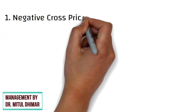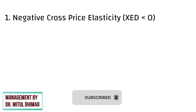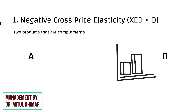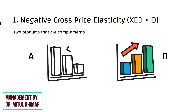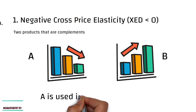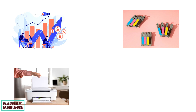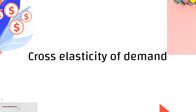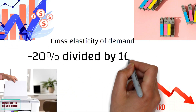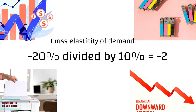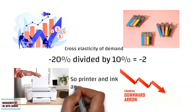Negative cross price elasticity is where the complementary cross elasticity of demand is less than zero. A negative cross elasticity denotes two products that are complements. If products A and B are complements, an increase in the price of B leads to a decrease in the quantity demanded for A, as A is used in conjunction with B. For example, in response to a 10% increase in the price of printer's ink, the demand for printers decreases by 20%. So the cross elasticity of demand would be minus 20% divided by 10%, which equals minus 2 — meaning an increase in the price of ink decreases the demand for printers. Printer and ink are therefore complements.